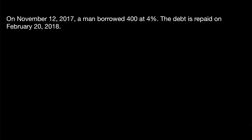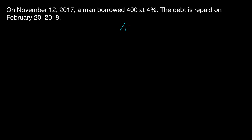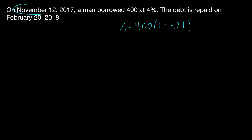Let's see an example of actually calculating simple interest. On November 12th, 2017, a man borrowed $400 at 4% simple interest. The debt is repaid on February 20th, 2018. We want to calculate the total amount repaid. Using the simple interest formula, the principal P is $400, the interest rate is 4% (0.04), and we need to find T — the time in years between November 12th, 2017 and February 20th, 2018.